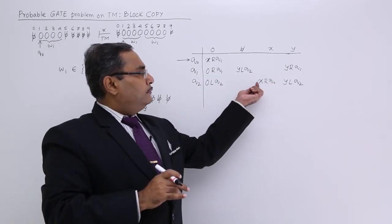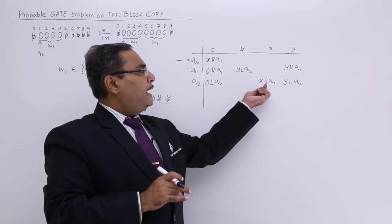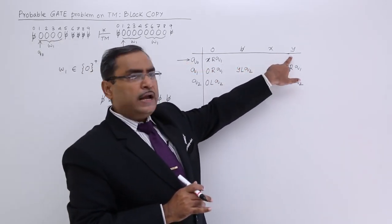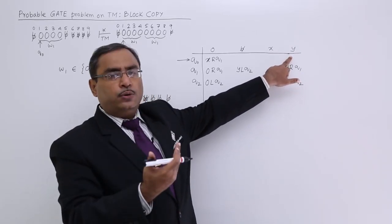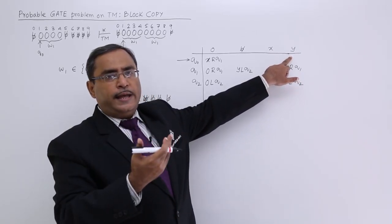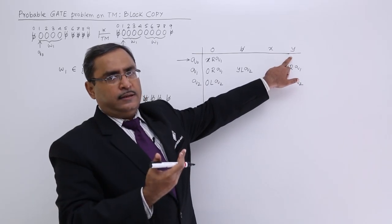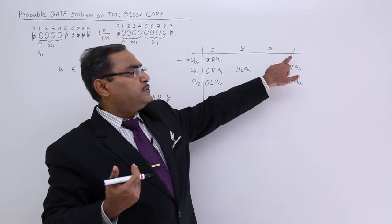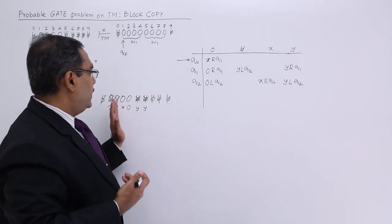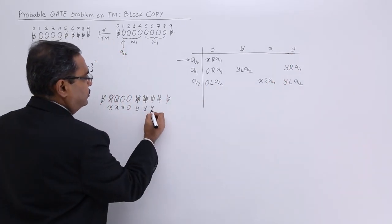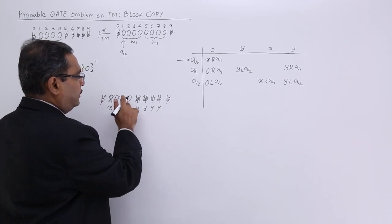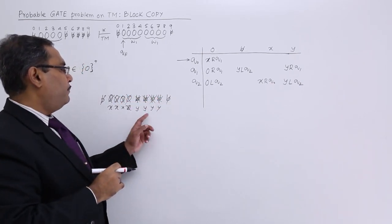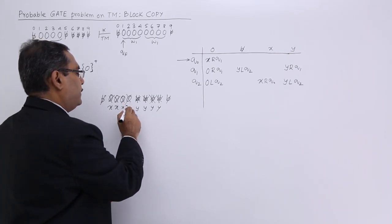After getting x, it is moving right and going to q0. But if q0 finds y, that means all the 0s have got considered and already marked as x. So, there is no 0 remaining, then that is the special case. In this case, all the 0s have got marked with x and all the blanks have got marked with y. Then what will happen?